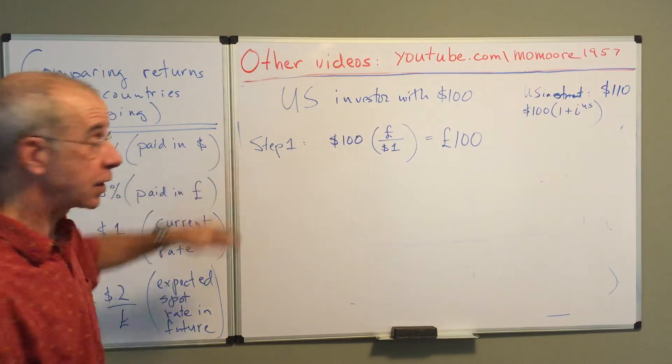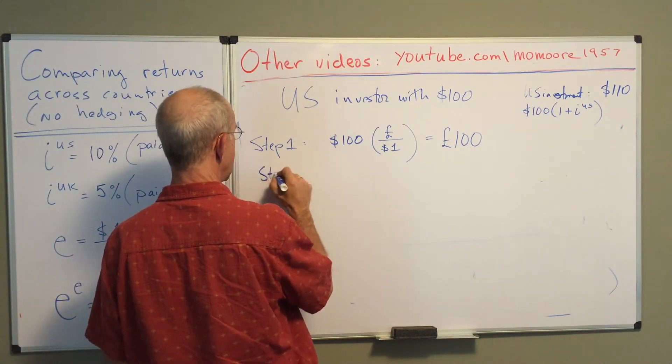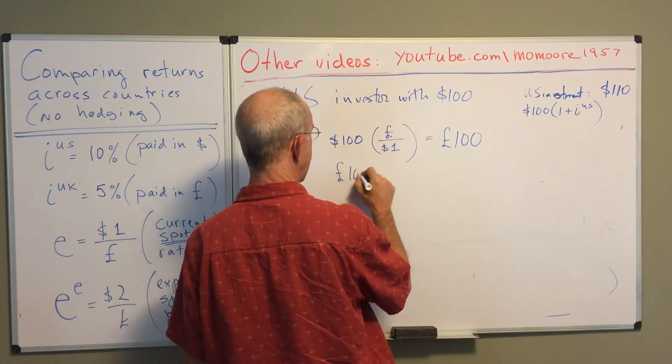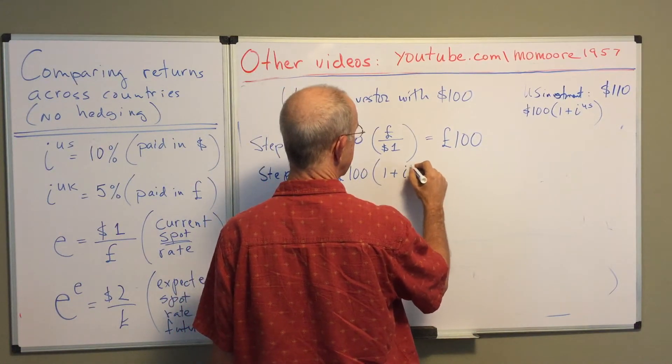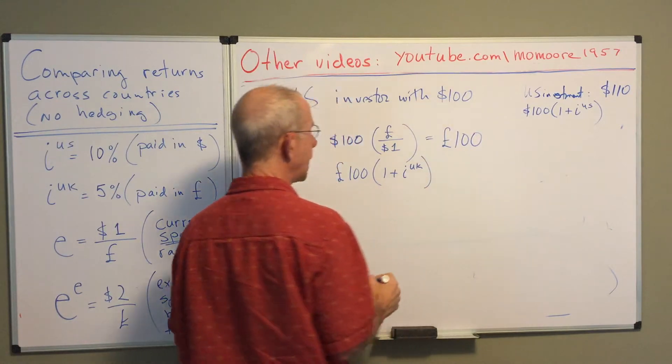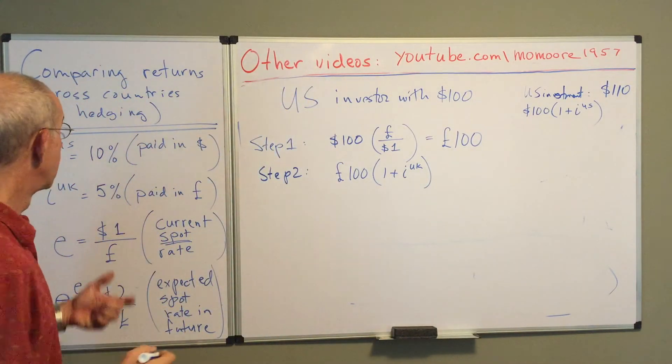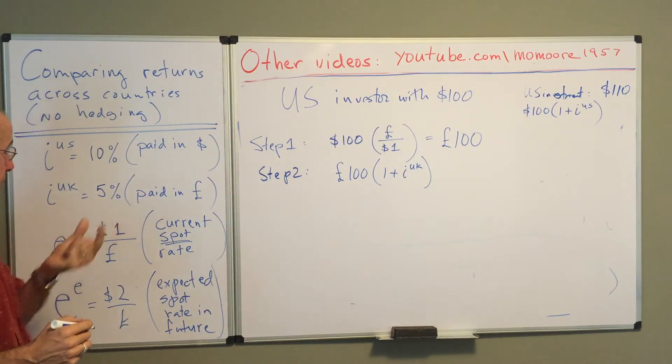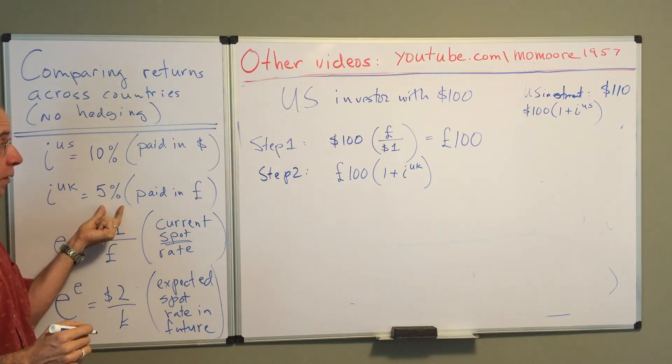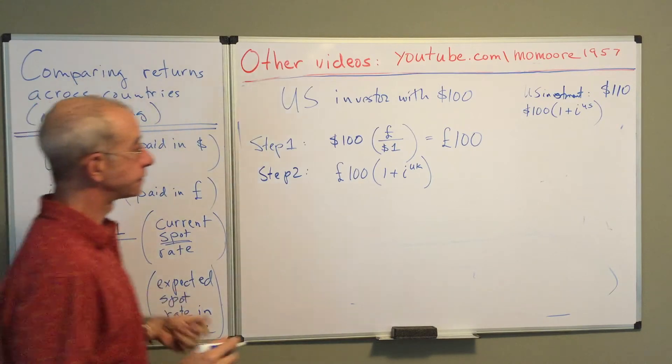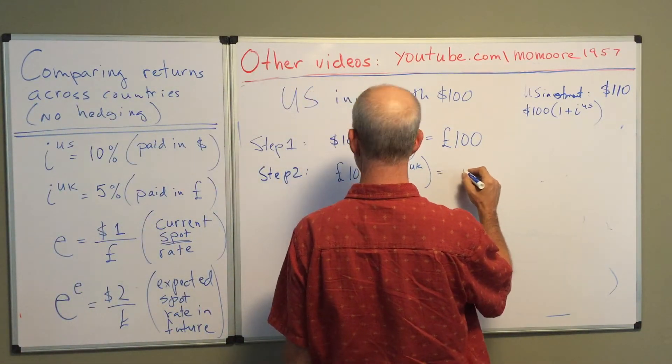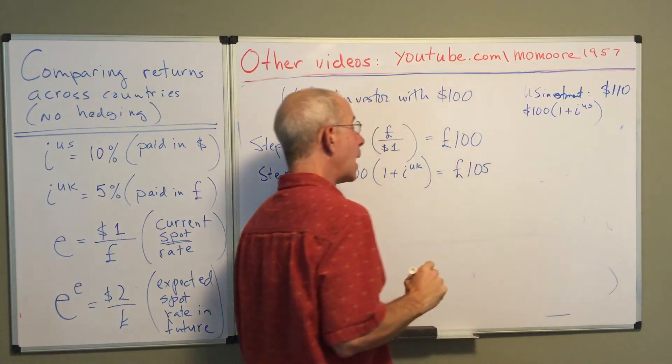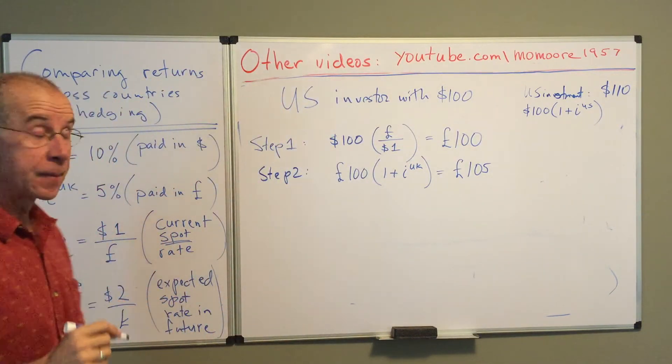So first step, convert using the exchange rate. Step two, they're going to take this one hundred pounds and invest in the U.K. asset, get five percent. So the U.K. asset is going to give them one hundred and five pounds at the end of the year.